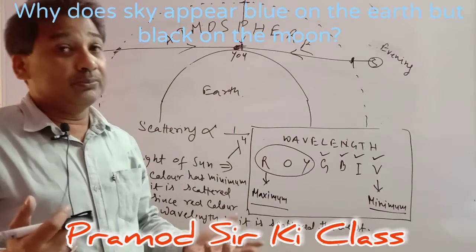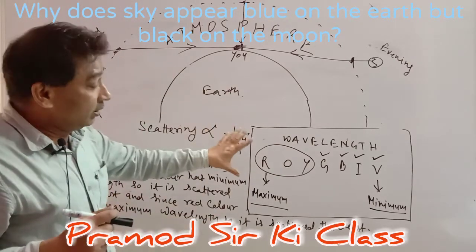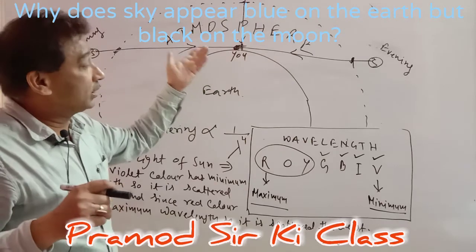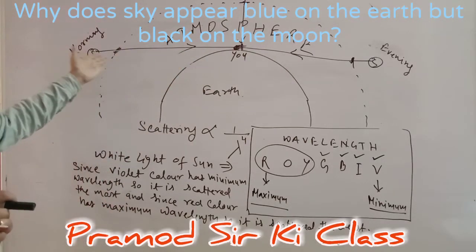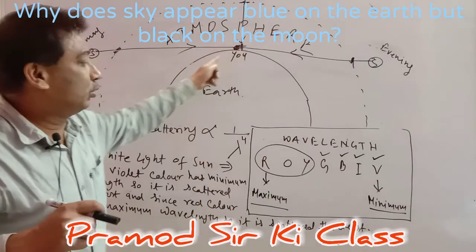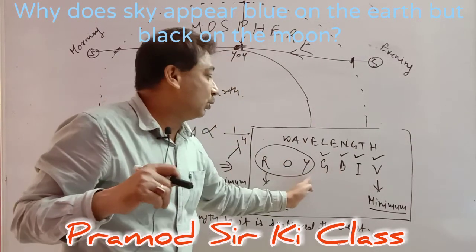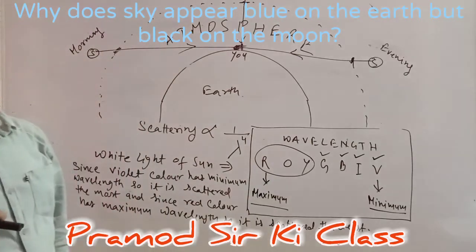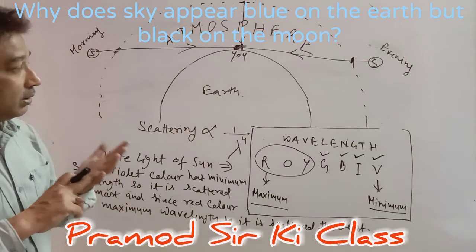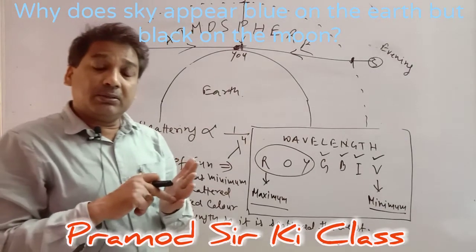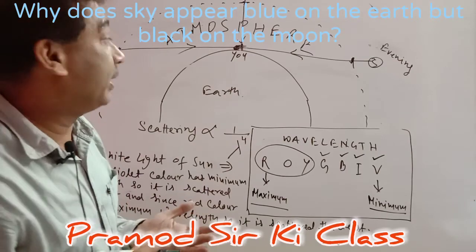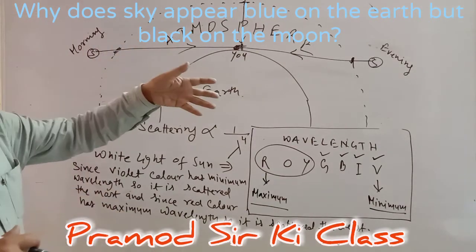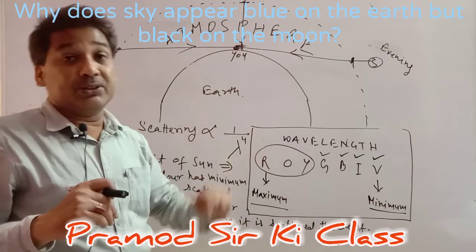That is why the sky appears black on the Moon. And the Sun appears red in the morning and evening because at those times scattering occurs over a long distance, so most of the colors with shorter wavelengths spread into the sky, and only red and yellow reach us. So scattering explains why the sky is blue on Earth, black on the Moon, and why the Sun appears red at sunrise and sunset.